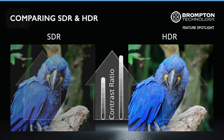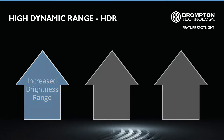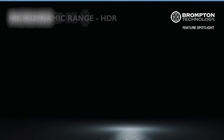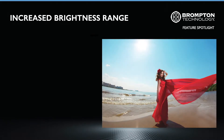For every pixel, HDR primarily delivers three image quality improvements. The first, and probably most important improvement, is a vastly increased brightness range. Having an increased brightness range is crucial for displaying the high level of detail contained within HDR imagery.